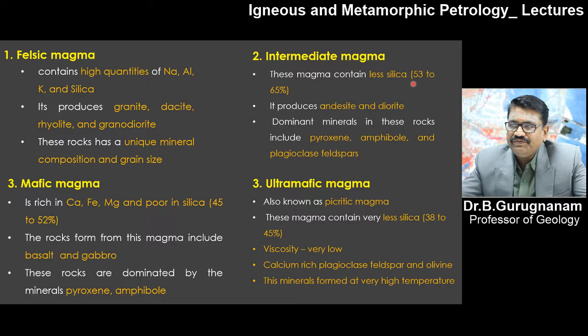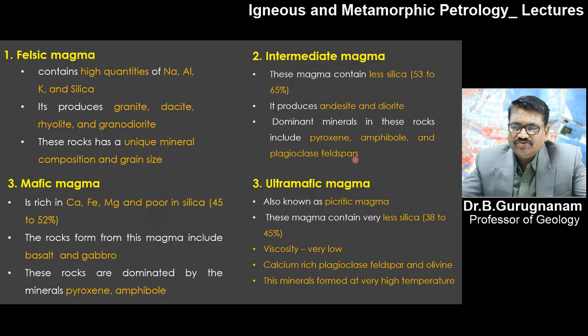Intermediate magma is one where the percentage of silica component is between 53 to 65%. The end products from this intermediate magma are andesite and diorite. The dominant minerals in these rocks include the pyroxene group of minerals, amphibole group of minerals, and the albite-anorthite plagioclase series of minerals.